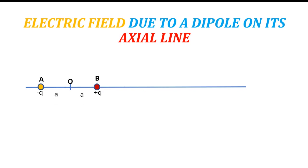From the origin O to plus q is distance a, and from the origin to minus q is another a. So the distance between the charges of the dipole is 2a. Let us consider a point C at a distance r from O.